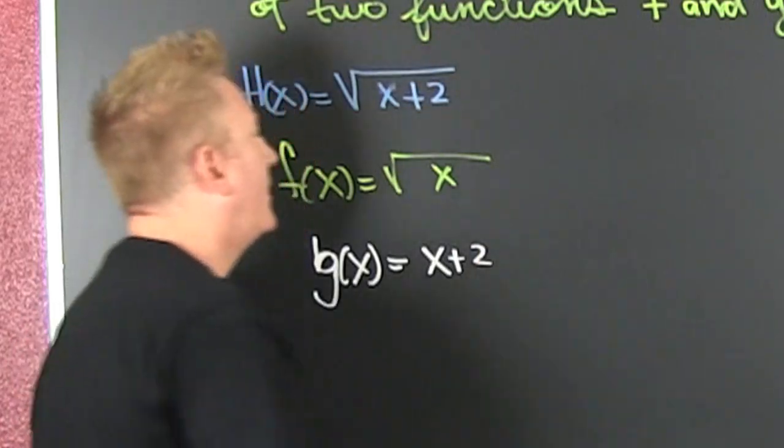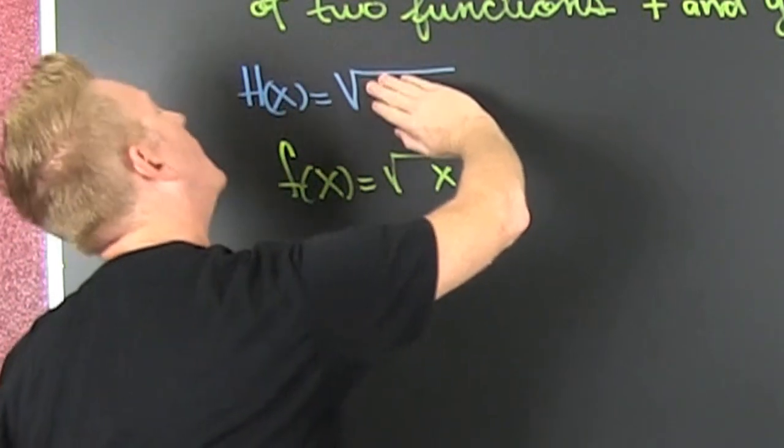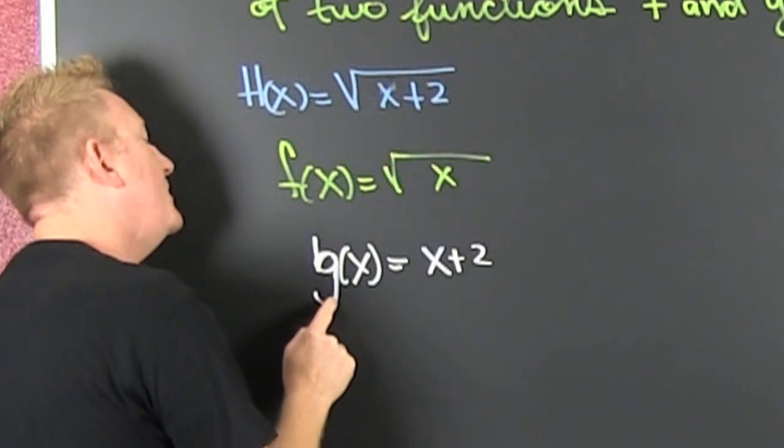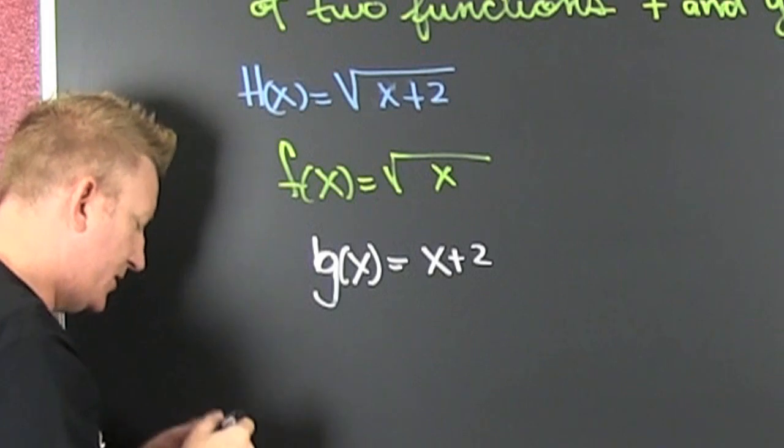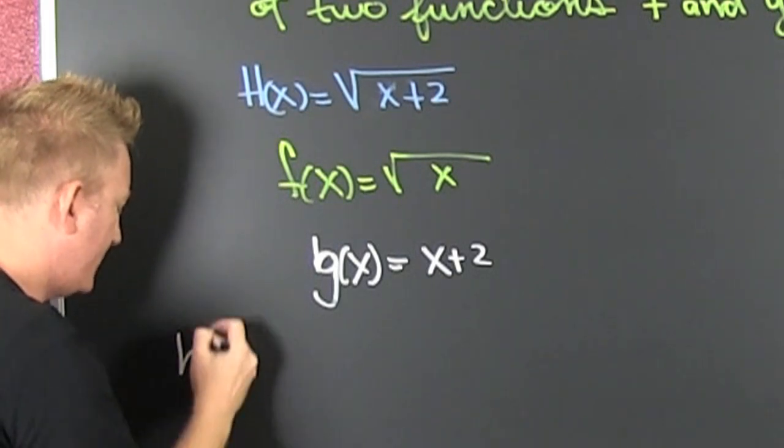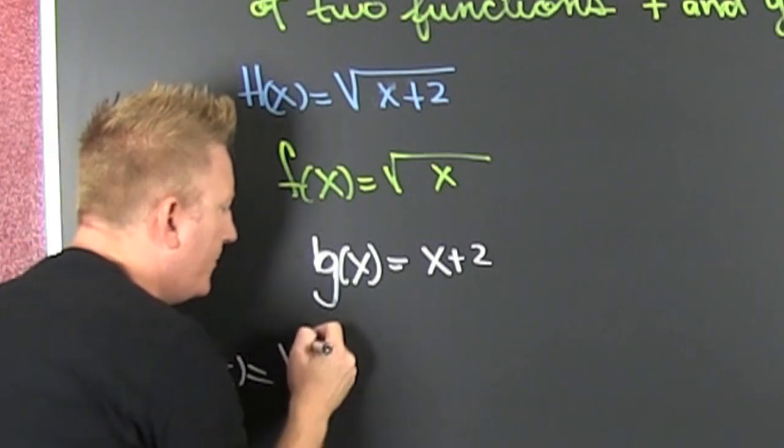X plus two. I don't know how you make this so freaking hard. Just cover something up. What's under your hand is the inside. What's... That's the... Look! A G of X. Looks more like a W. Oh, my gosh.